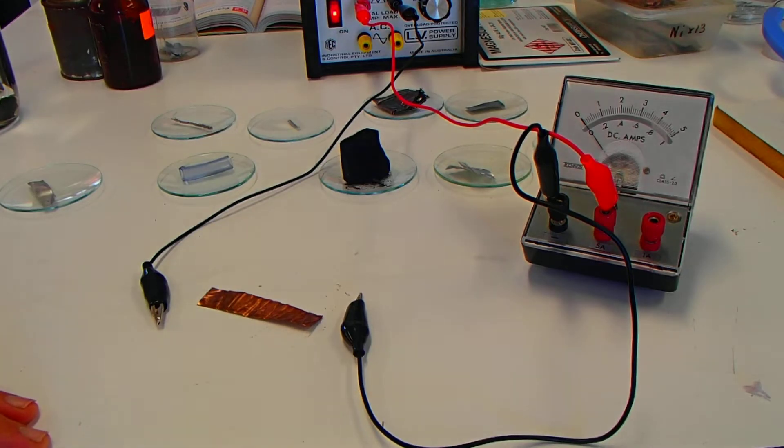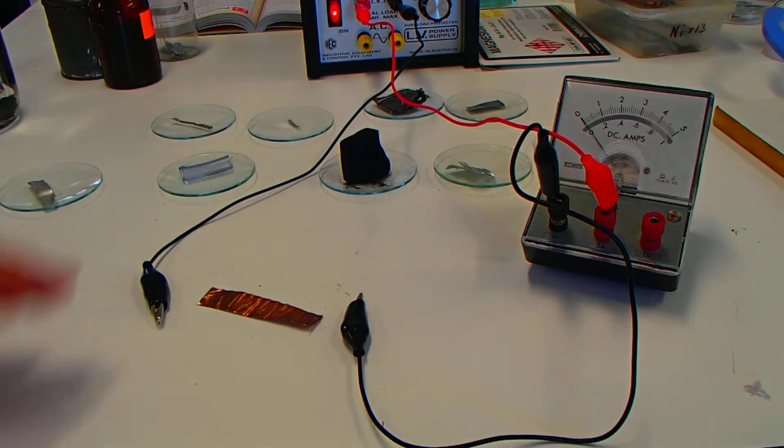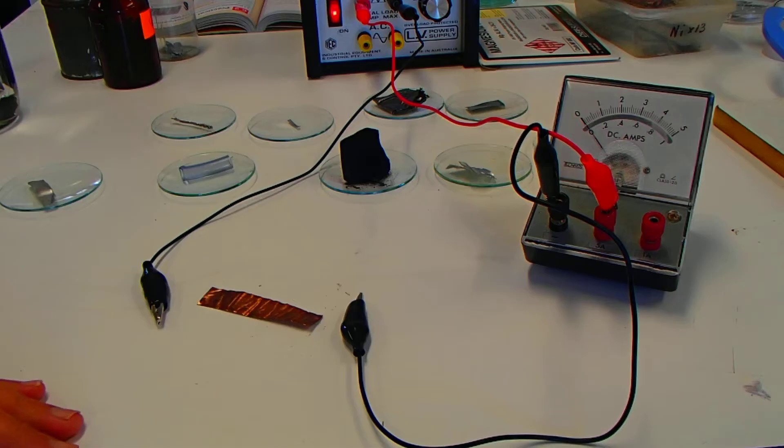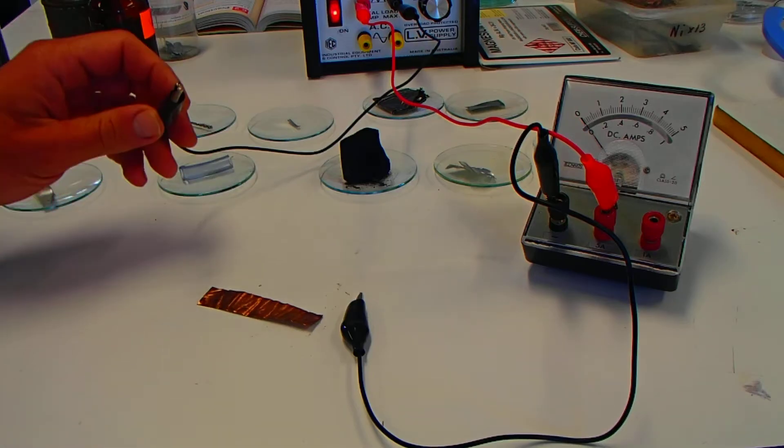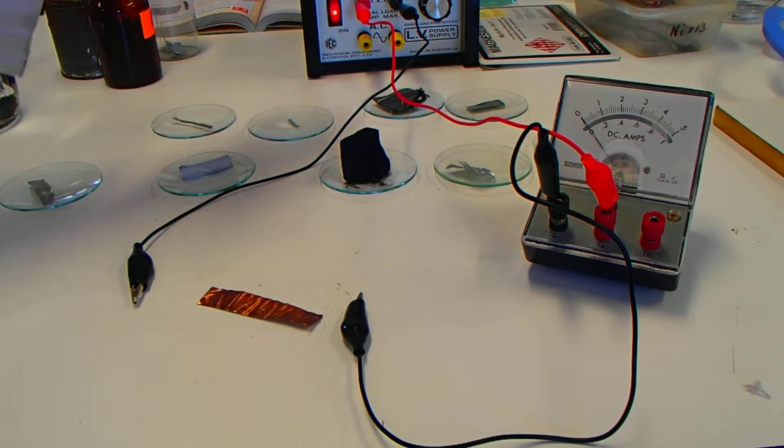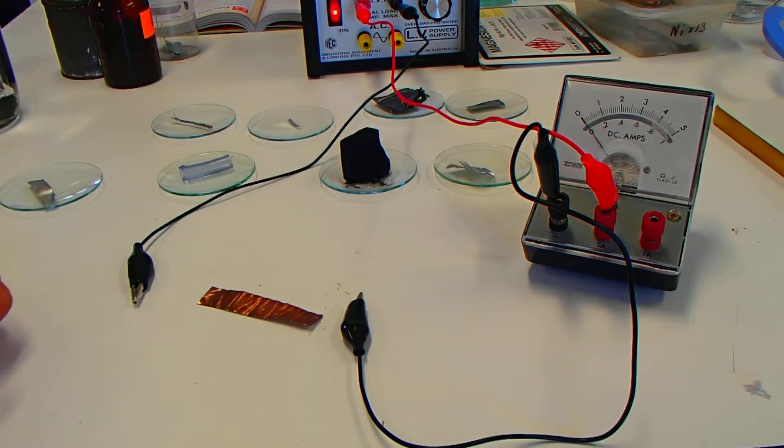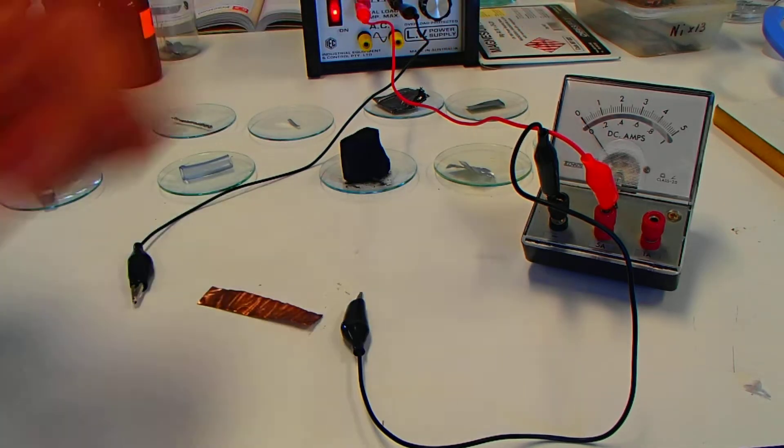And again, this time we are looking at the electrical conductivity. So we're going to be running a current through the samples. I've got a power pack hooked up here on DC, positive and negative, and we're running that through this ammeter here.